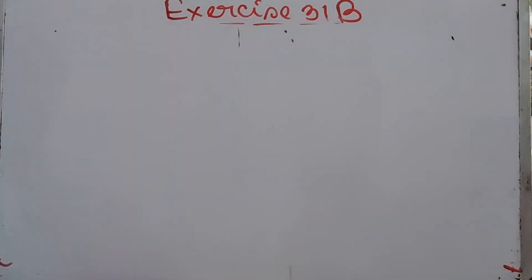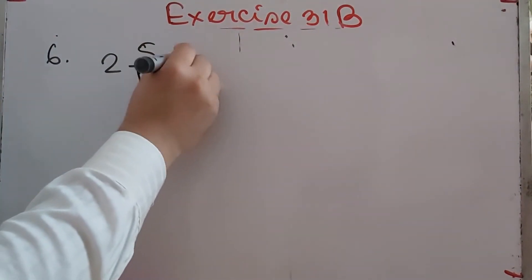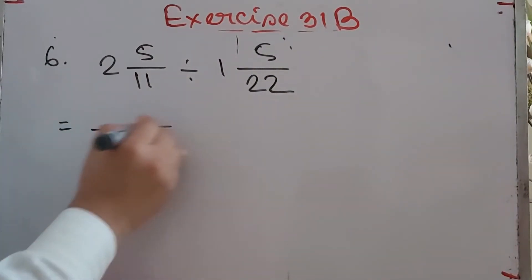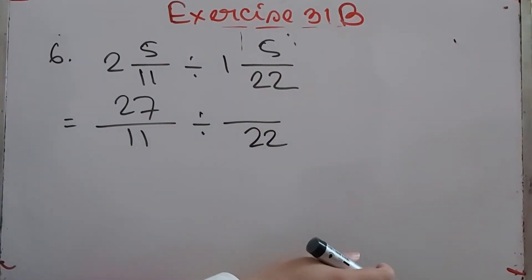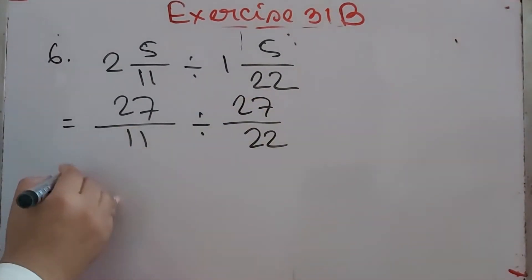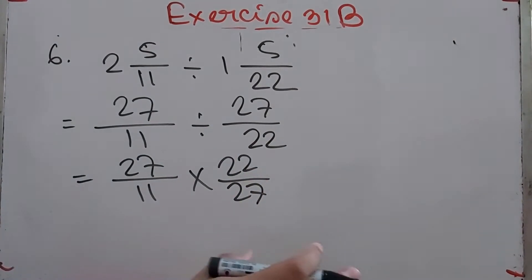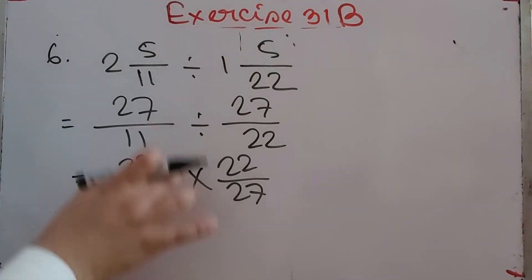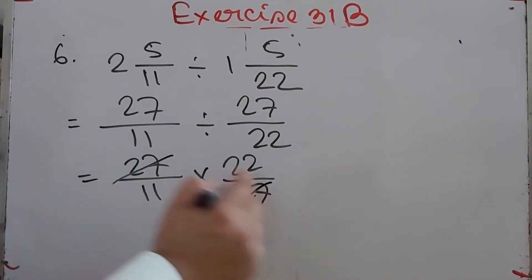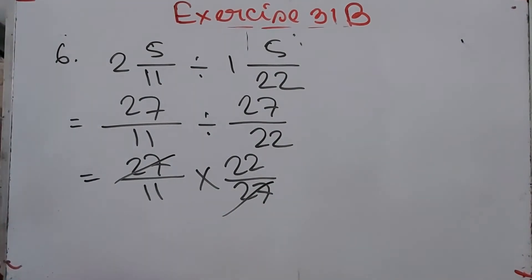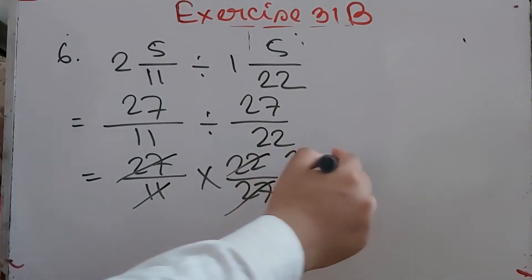Number 6: 2 whole 5/11 divided by 1 whole 5/22. Convert: 11×2 = 22 plus 5 = 27/11, and 22×1 = 22 plus 5 = 27/22. Multiply 27/11 by the reciprocal 22/27. Dividing 27 by 27 gives 1, and 22 divided by 11 gives 2. So the answer is 2.